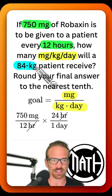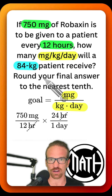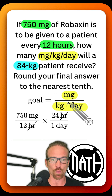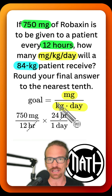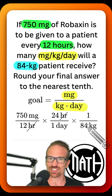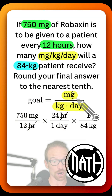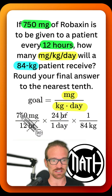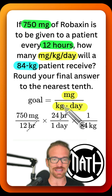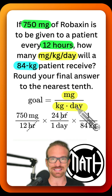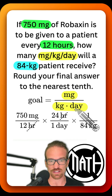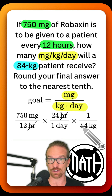Milligrams at the top, day at the bottom — but we still need kilograms at the bottom. Lucky for us, the client's weight is given to us in kilograms. Be careful though: where do we need kilograms in our goal? We need it at the bottom. I wrote the 84 kilograms at the bottom because our goal requires milligrams as the only word at the top, with kilogram and day as the only two words at the bottom. We have that here, and now we've met our goal.